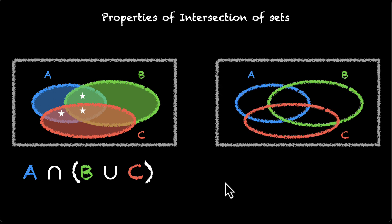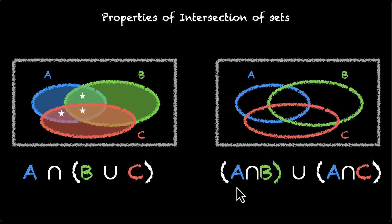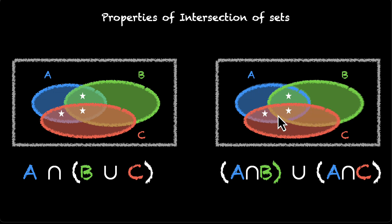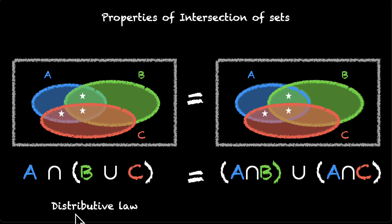This property says there's another way to write this — think of it as expanding. You get A intersection B union A intersection C. Let's verify: A intersection B gives us these two small regions; A intersection C gives us this region. We've marked the exact same regions both ways. Whether we start with one form or the other, we reach the same conclusion. Both of them are the same.